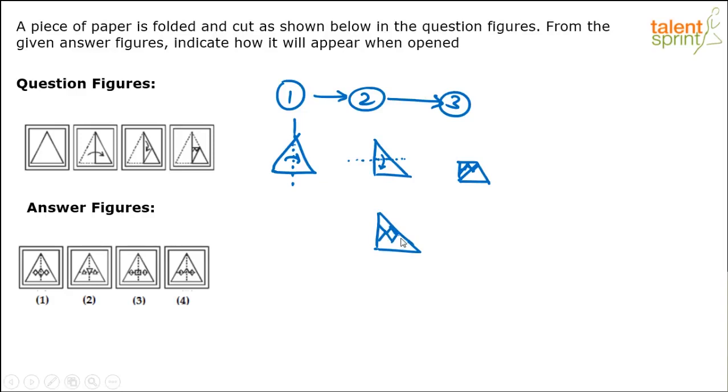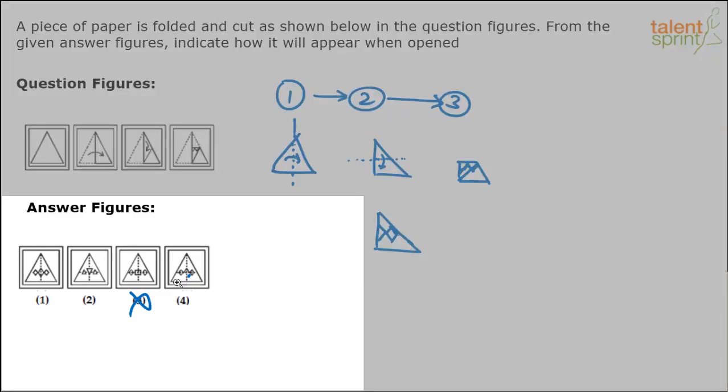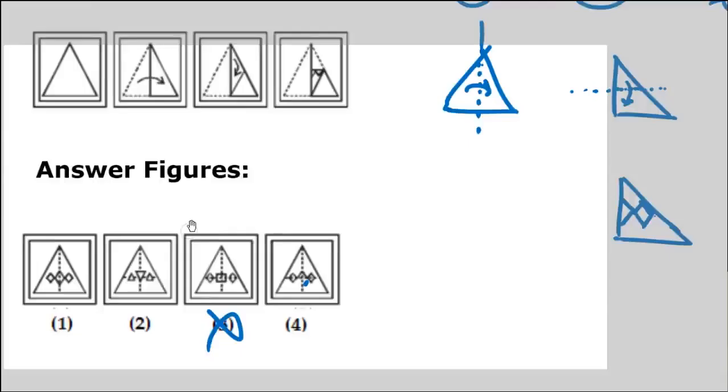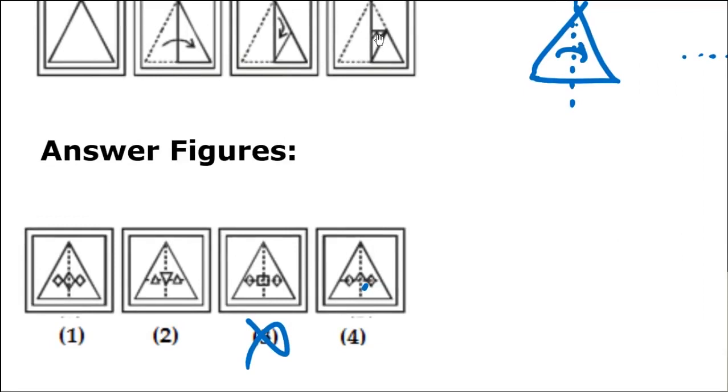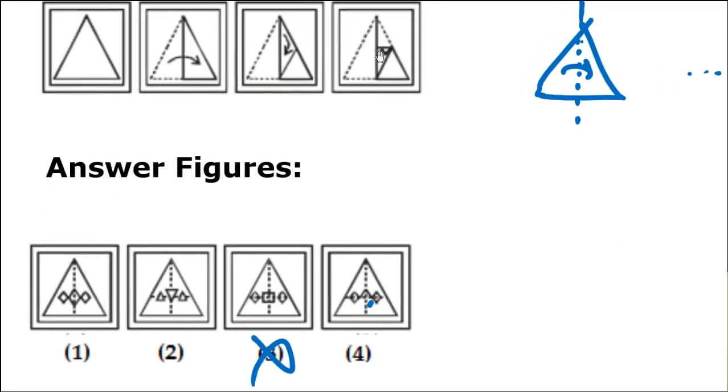So see which option has got that? I think option 3 gets eliminated because here you see it's like an angular cut. Here we have got a square. A square in the middle is not possible. Similarly, if you see option 4 gets eliminated because whatever is available here, that itself is missing. You see that bottom portion is missing. If you observe, here we have got an angular cut. That is missing here. That portion is missing.